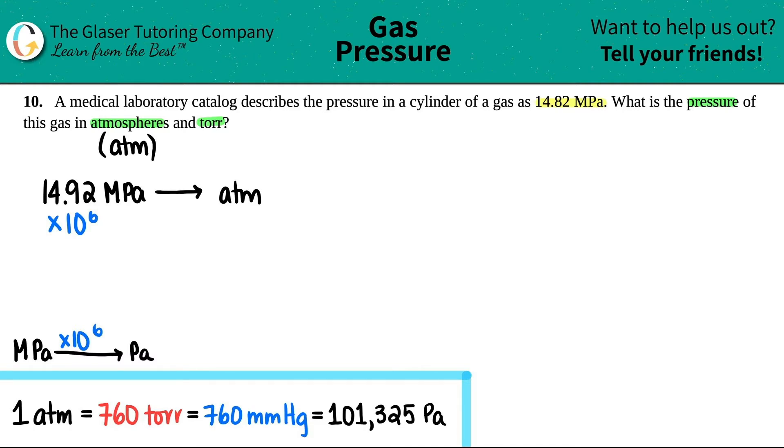14.82 times 10 to the 6 so I get I could start off with saying I got 1.482 times 10 to the 7, and now I'm in just pascals.